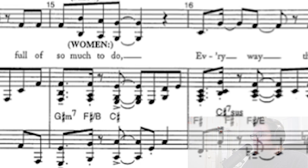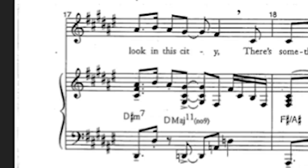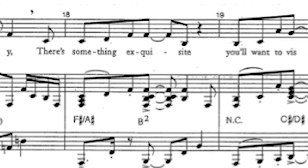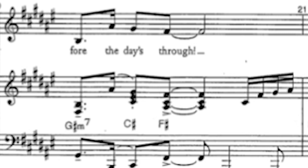It continues: 'Every way that you look in the city' — and there's that D natural that we hinted at at the beginning of the song. 'There's something exquisite you'll want to visit before the day's through.' Then we go into the B section — totally different key change, a totally different tone. But this is what Wicked's about: it keeps changing keys and tonalities constantly. We're never in the same key most of the time.